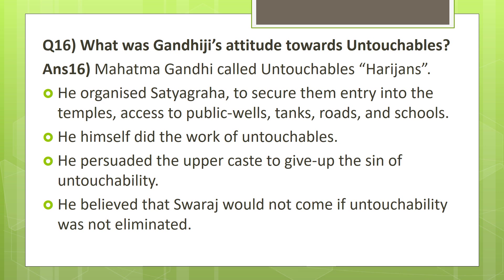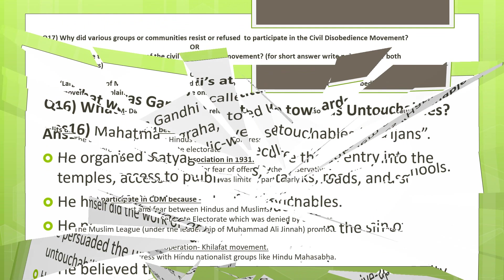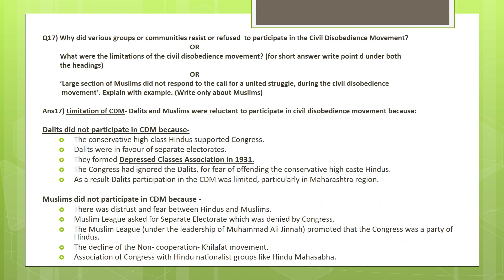What was Gandhiji's attitude towards untouchables? — I have never seen this question coming in exams. Why did people not participate in CDM, or limitations of CDM, or who did not participate in CDM? It is regarding Dalits and Muslims that they did not participate, and this is a very, very important question often asked. I've given five points for Dalits and five for Muslims. If this comes as a five-marker, include two to three points from Dalits and two to three for Muslims — mainly five points covering the main reasons. But I've given five for both because separately also questions are asked on each.